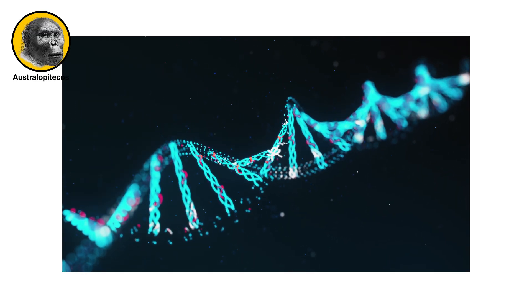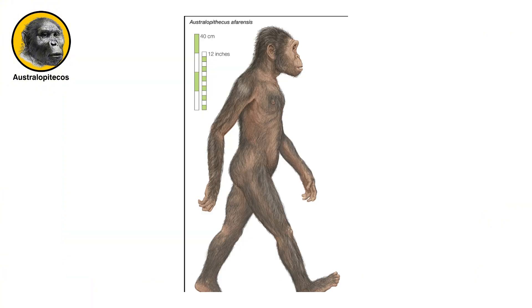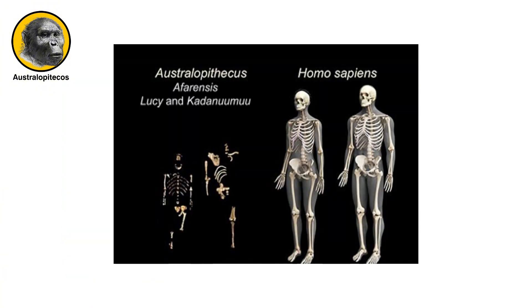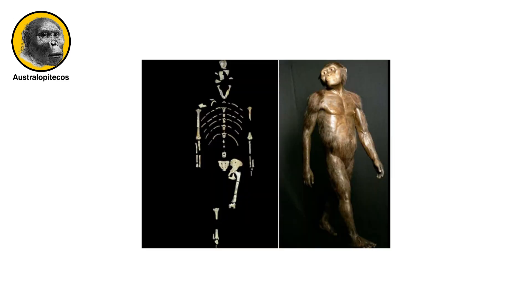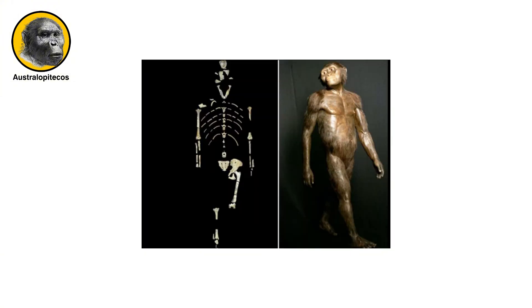Australopithecus — science once believed that this species was, in fact, a close ancestor of humans. However, this classification was questioned after the discovery of older Australopithecus fossils with characteristics very similar to members of the Homo genus. As characterized by the fossil evidence, members of Australopithecus bore a combination of human-like and ape-like traits.